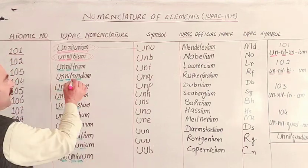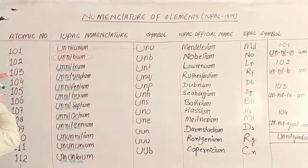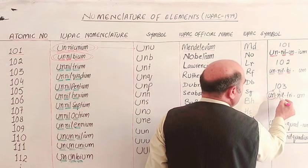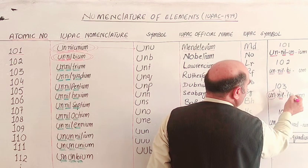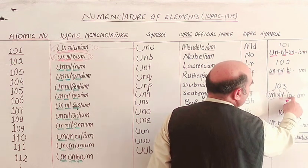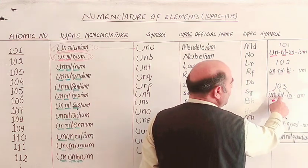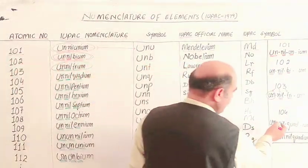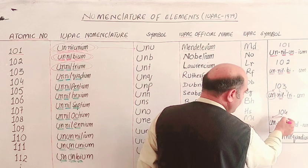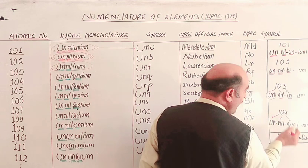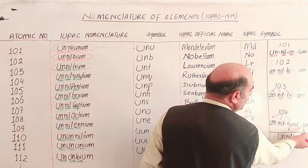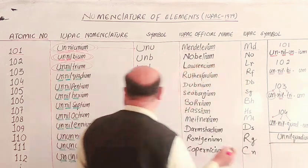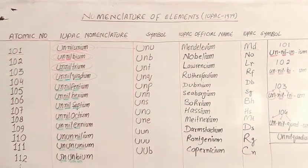For atomic number 103: 1 is 'un', 0 is 'nil', 3 is 'tri', combined to give 'Unniltrium'. That is the systematic IUPAC name for element 103, which is Unniltrium.